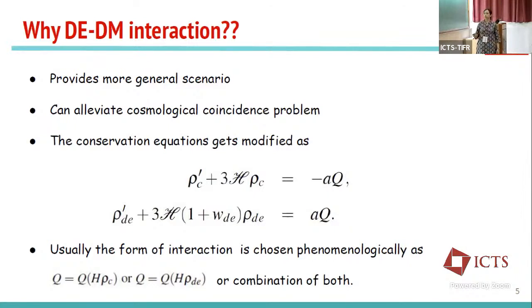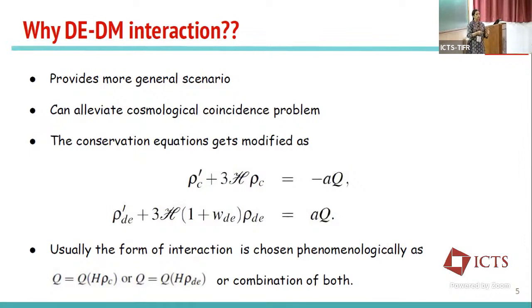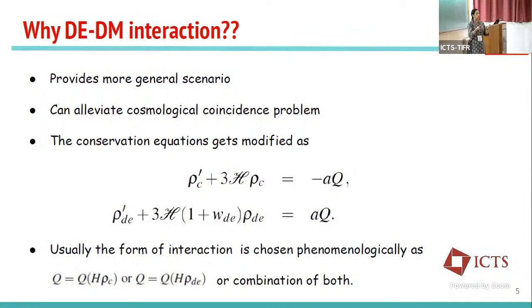This interaction may give rise to interesting cosmological implications. Another motivation is that it can alleviate the cosmological coincidence problem. We know that dark energy started dominating the cosmological dynamics at around z ~ 0.7 or even later. Considering an interaction between dark energy and dark matter can alleviate this coincidence problem, because when two components interact, one grows at the expense of the other.